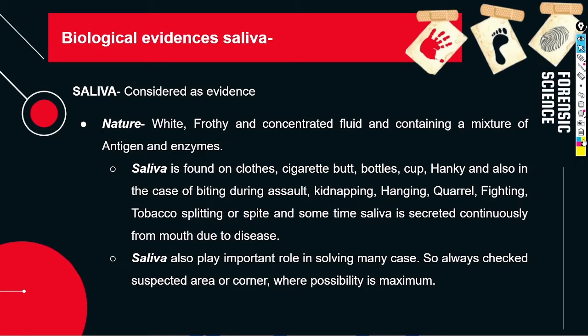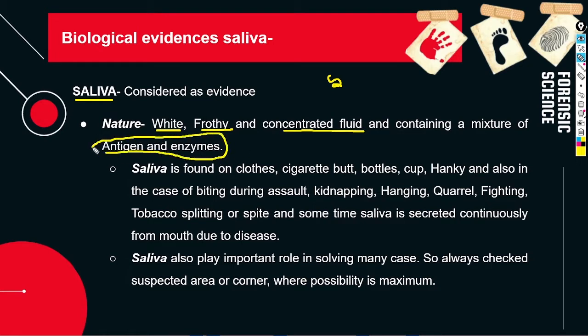First we need to know what is saliva. Saliva is an extracellular fluid produced and secreted by a salivary gland in the mouth. Human saliva is 98% water, plus electrolytes, mucus, WBCs, epithelial cells, enzymes, and antimicrobial agents. Saliva is a white, frothy, and concentrated fluid and contains a mixture of antigens and enzymes.